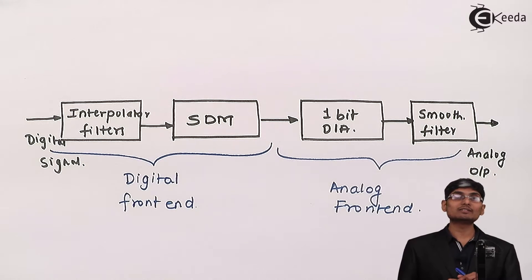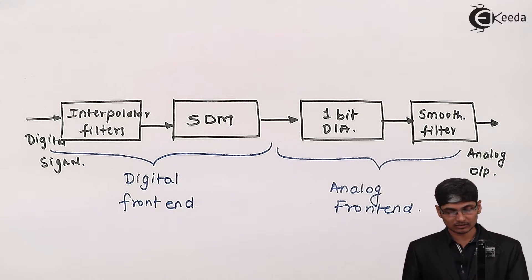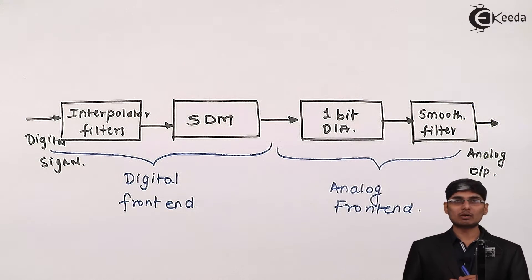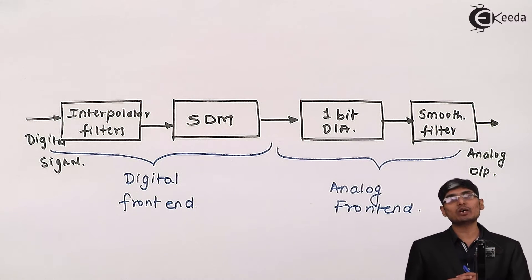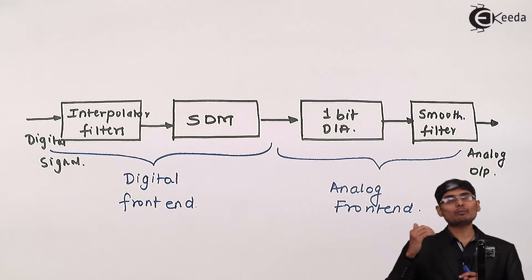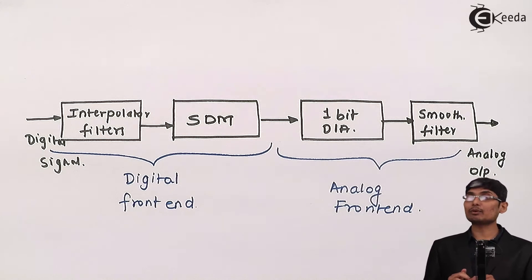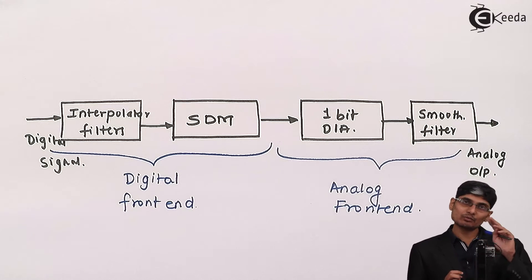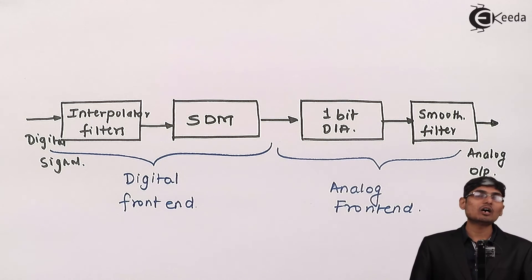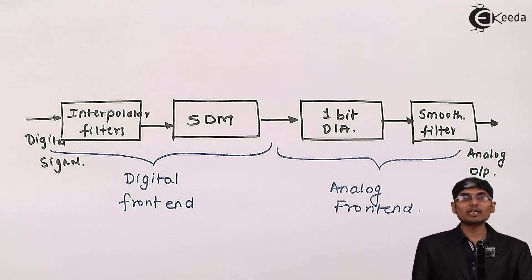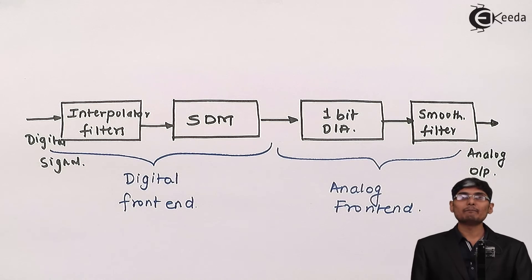We then pass it to sigma delta modulators, short form SDM. This sigma delta modulator produces a one-bit noise error. This one bit is then passed through a D2A converter which gives an appropriate analog output. This analog output is smoothened using a smoothening filter to remove the quantization noise, and the output is an analog output. In this way, we use a digital to analog converter using the oversampling method.